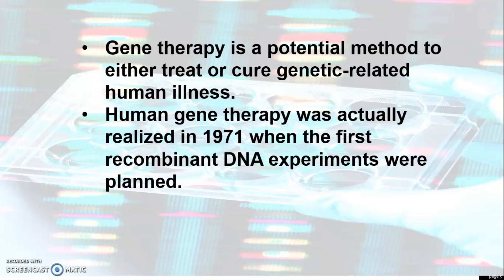Human gene therapy was first realized in 1971 when the first recombinant DNA experiments were planned. It can be simply viewed as the insertion of foreign DNA into a patient's tissue with the hope of successfully eradicating the targeted disease. It was inspired by the success of recombinant DNA technology which occurred over 20 years. Without a doubt, gene therapy is the most promising yet possibly unfavorable medical field being studied.